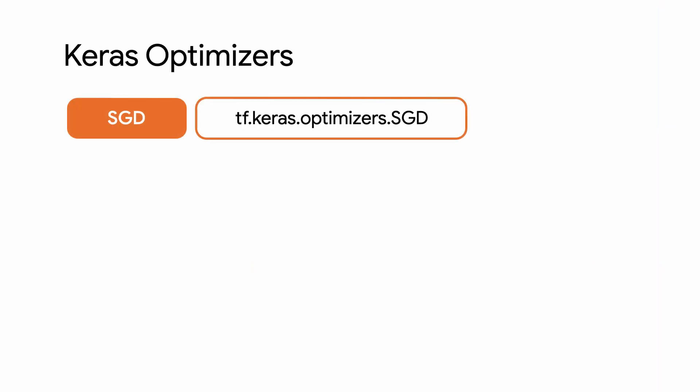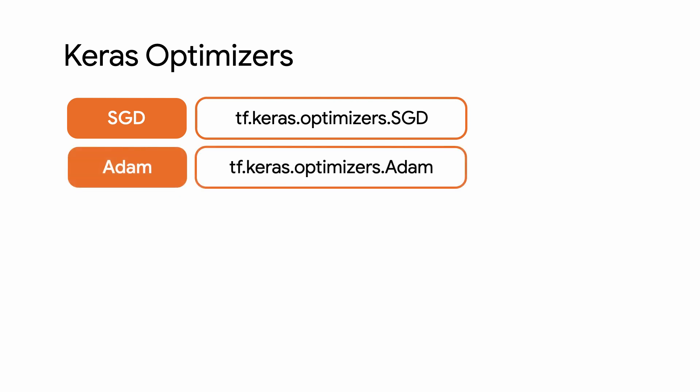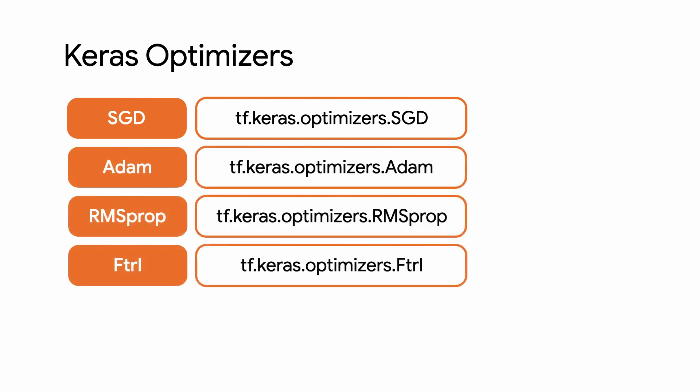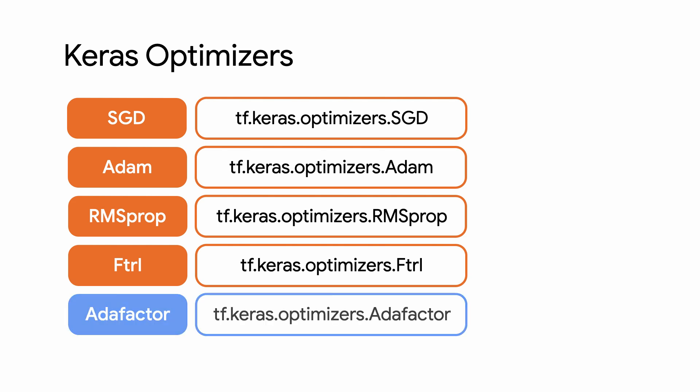You're probably familiar with the Keras optimizers. Maybe you've used Adam or SGD to train your models. Well, starting from TensorFlow 2.9, we have been carefully upgrading this API and introducing new optimizers. In TensorFlow 2.11, we've turned them on by default. Don't worry — your existing code will still work the same for most users. But now you can take advantage of new features like Weight Decay and a brand new optimizer, Adafactor.